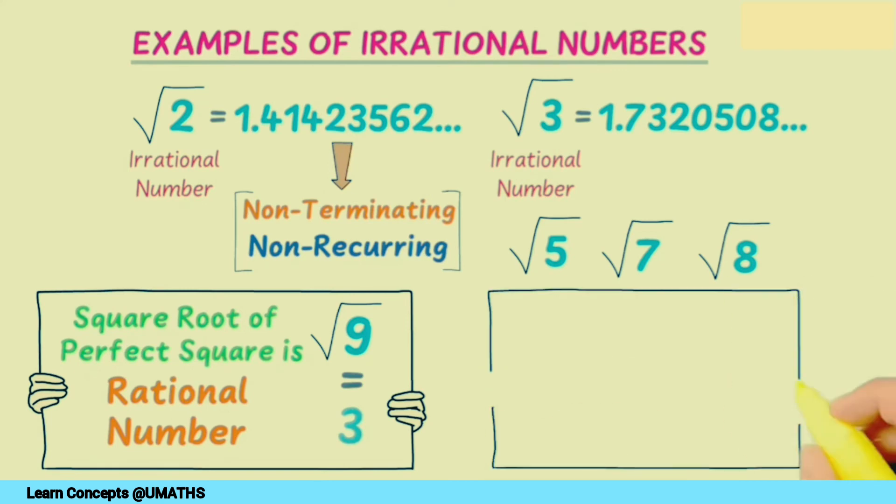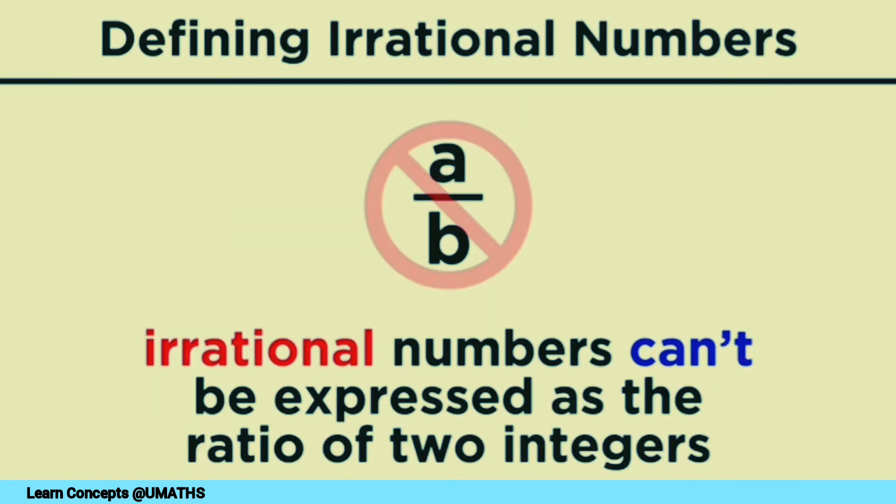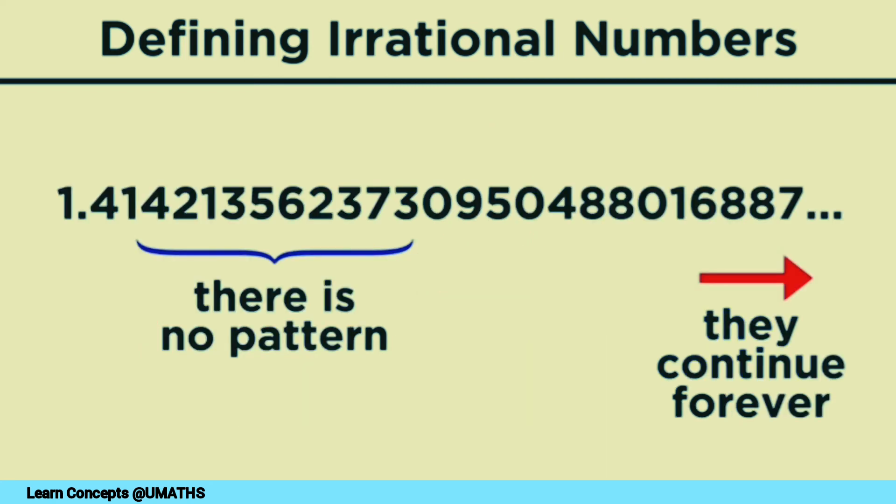Note that we cannot put irrational numbers into p by q form. By definition, a number which cannot be expressed as a ratio of two integers is called an irrational number. We learned that a non-terminating, non-recurring decimal represents an irrational number.